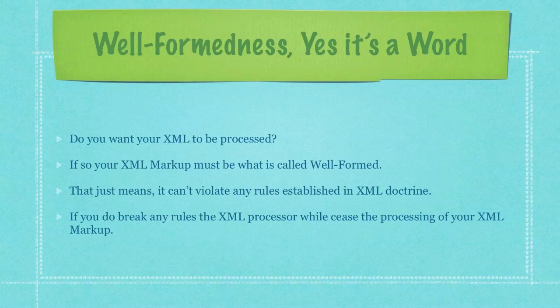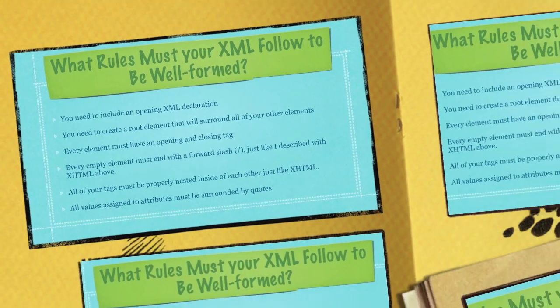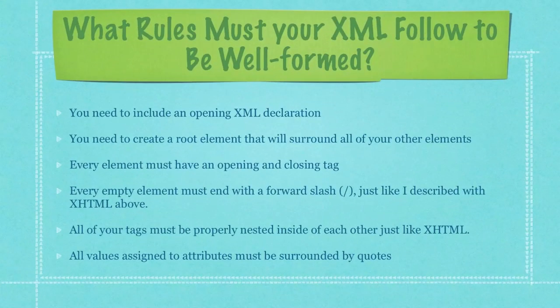If you want your XHTML to be processed, your XML markup must be what is called well-formed. That just means it can't violate any rules established in XML doctrine. If you do break any rules, the XML processor will cease processing your XML markup. So what rules must your XML follow to be well-formed? You need to include an opening XML declaration. You need to create a root element that will surround all of your other elements. Every element must have an opening and closing tag. Every empty element must end with a forward slash, just like with XHTML. All values assigned to attributes must be surrounded by quotes, just like XHTML.